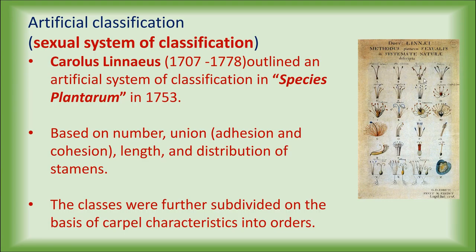Linnaeus first classified plants based on the number of stamens, their union, adhesion and cohesion, and afterwards these classes were classified into orders based on the type of carpels. However, the artificial system of classification was not followed for a long time because totally unrelated plants were kept together in a single group, whereas closely related plants were placed in widely separated groups. For example, the Zingiberaceae family of Monocotyledons and Anacardiaceae family of Dicotyledons were placed under the class Monandria because both family plants possess a single stamen. Similarly, Prunus was classified along with Cactus because of the same number of stamens, even though they are different types of plants.